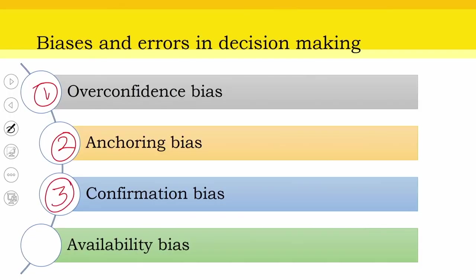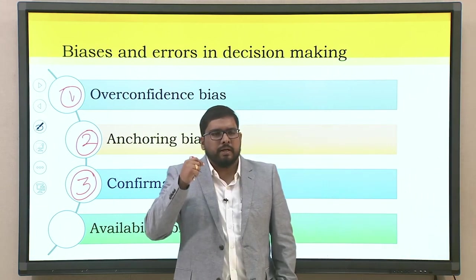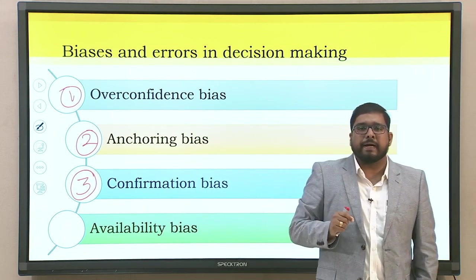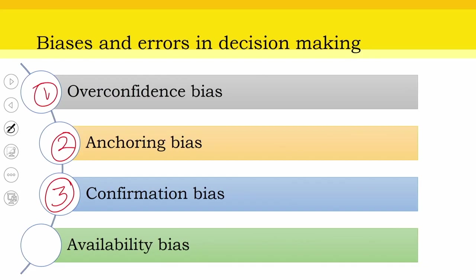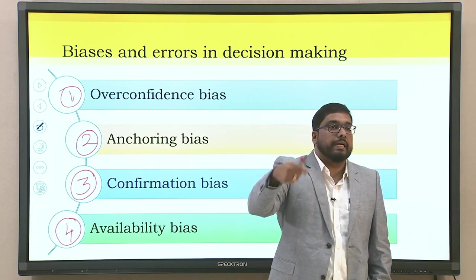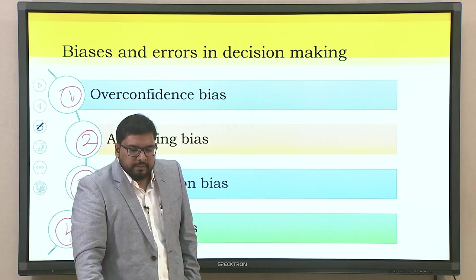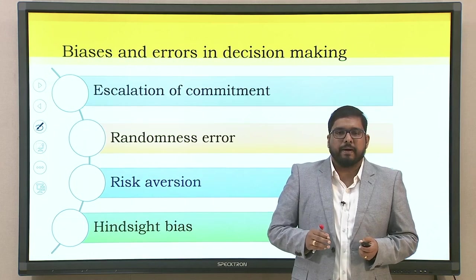The third is confirmation bias — more about a group characteristic where intelligent people confirm to a particular thing and go with the flow. Confirmation bias is risky because certain critical bits of information get neglected or undermined, creating a barrier to good decision making. The fourth is availability bias — the critical information needed to make an effective decision is not available, so you make a decision with whatever is available. This leads to availability bias, guided by available conditions and resources.